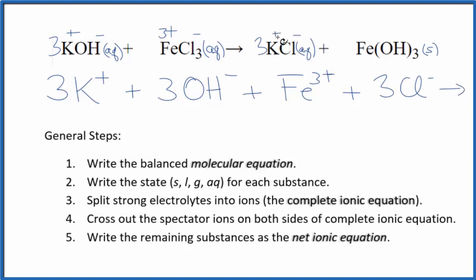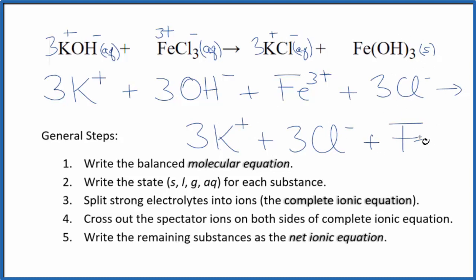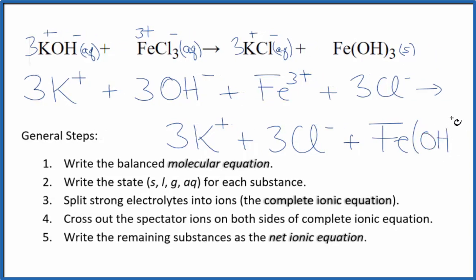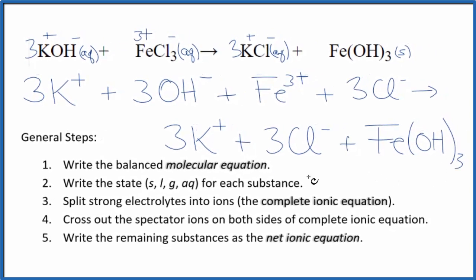On the product side, we have three potassium again. Three potassium ions plus three chlorides. And then the iron three hydroxide, that's a solid. We're not going to split that apart, so we just keep that FeOH3. These are our products. So this is what we call the complete or total ionic equation.